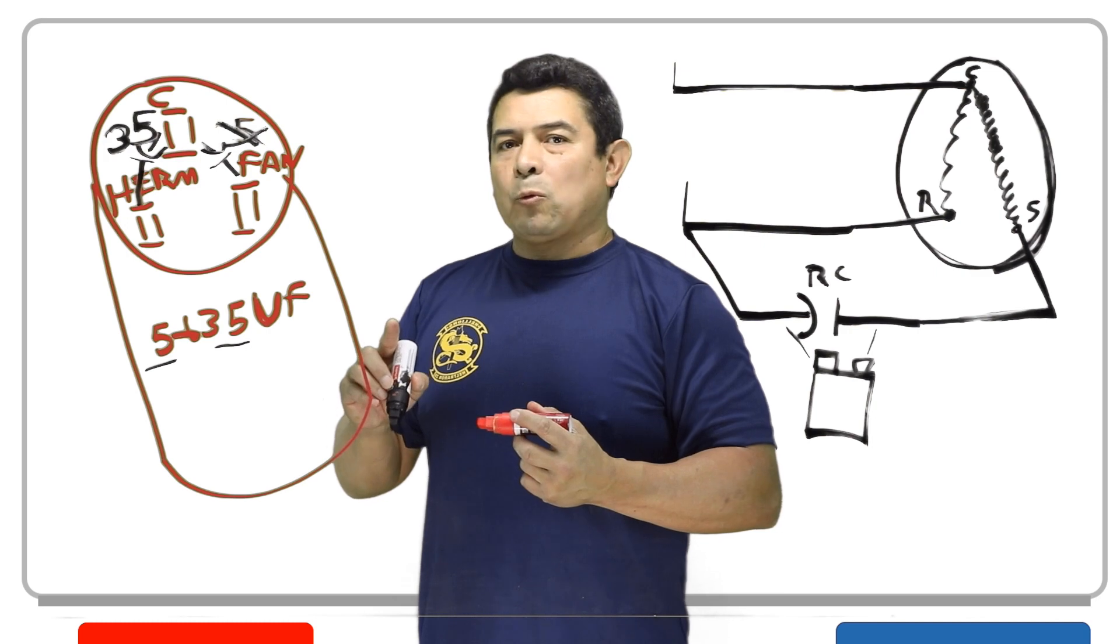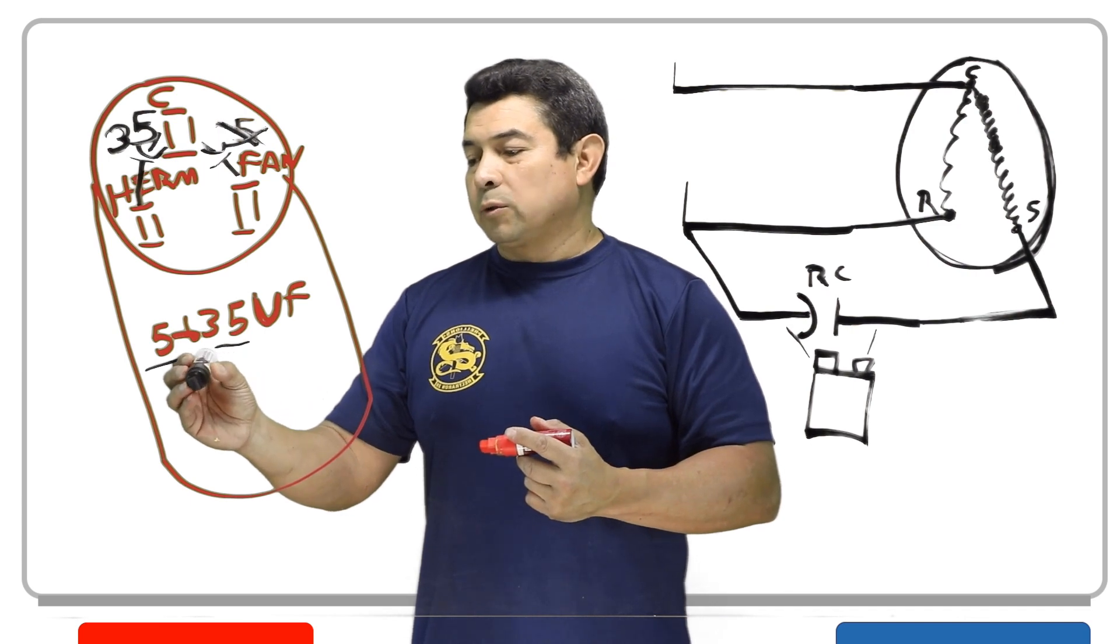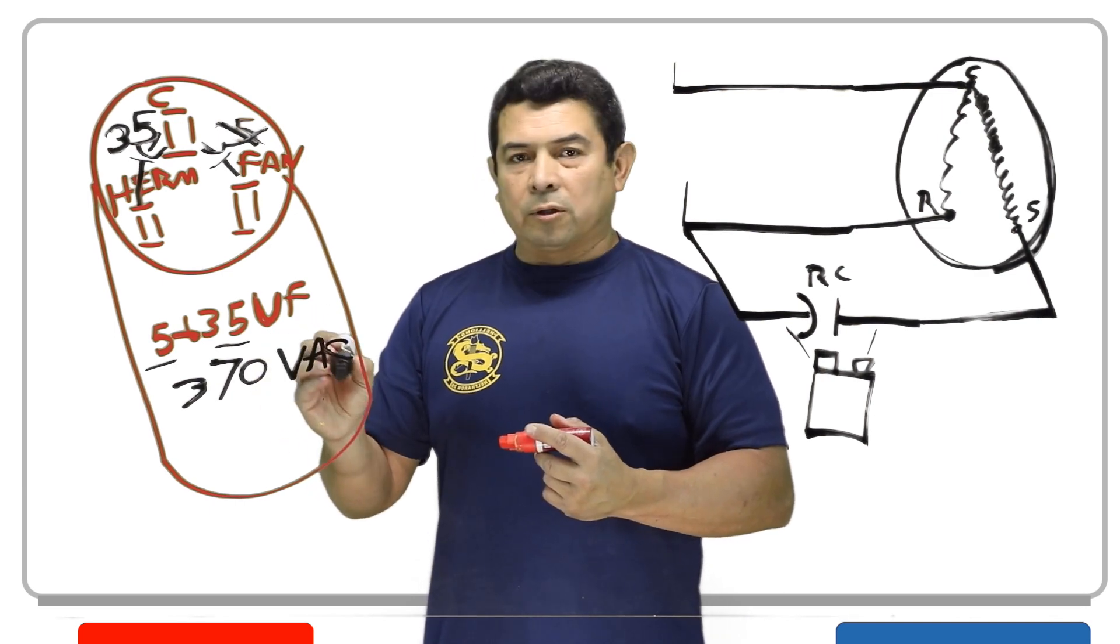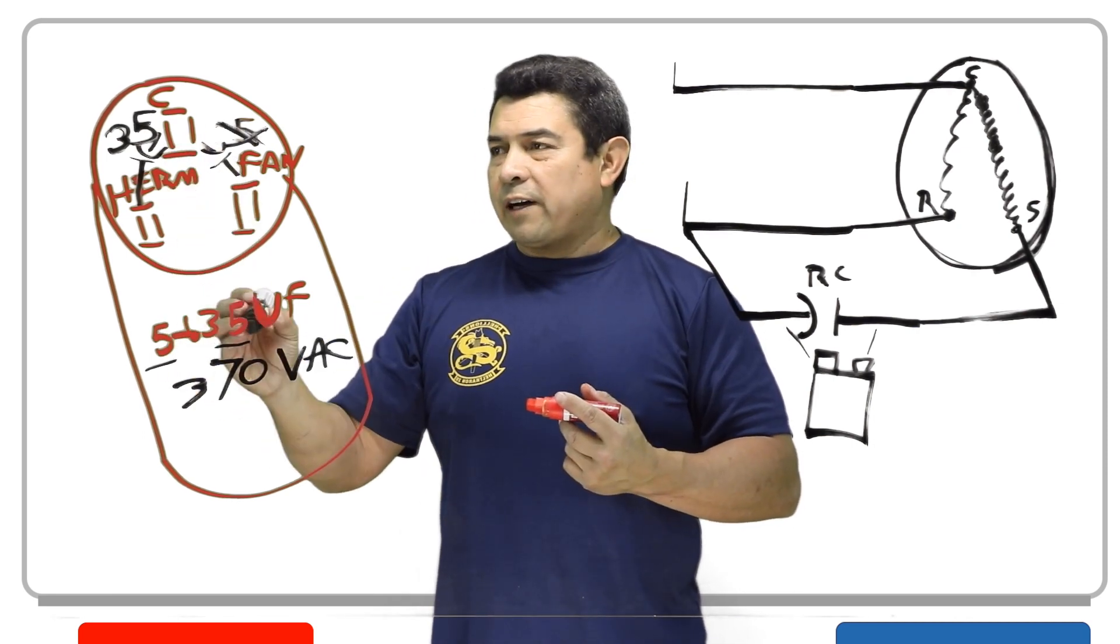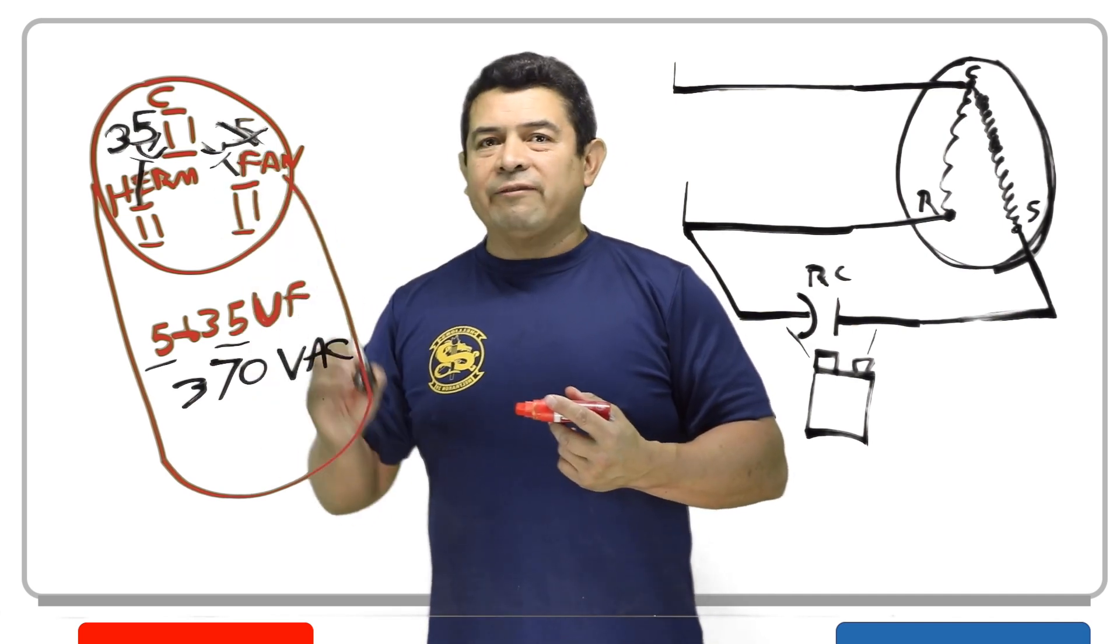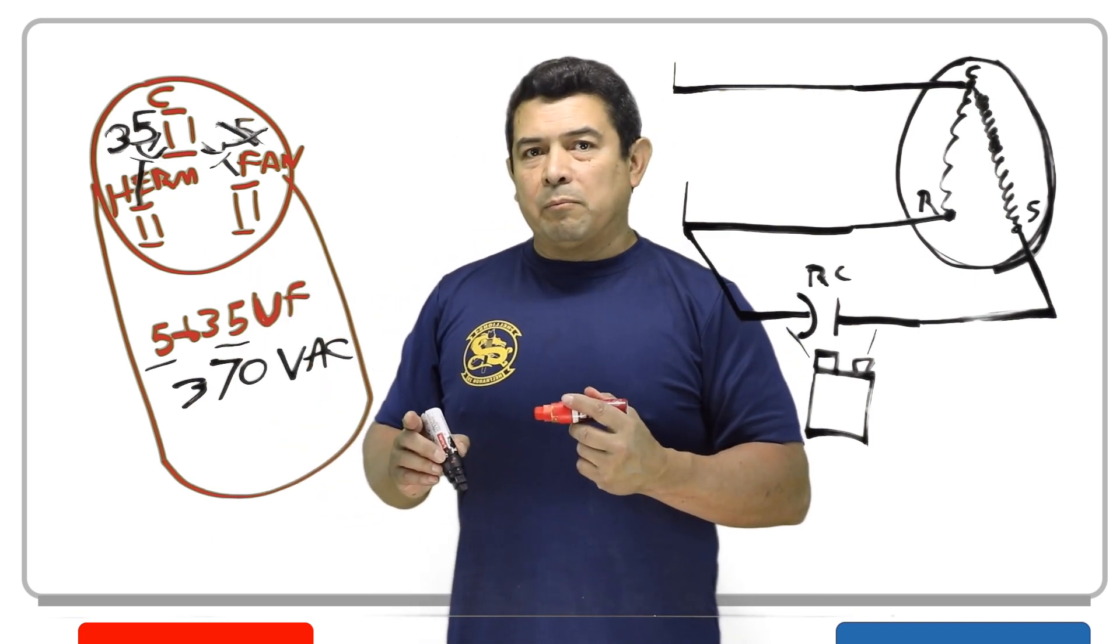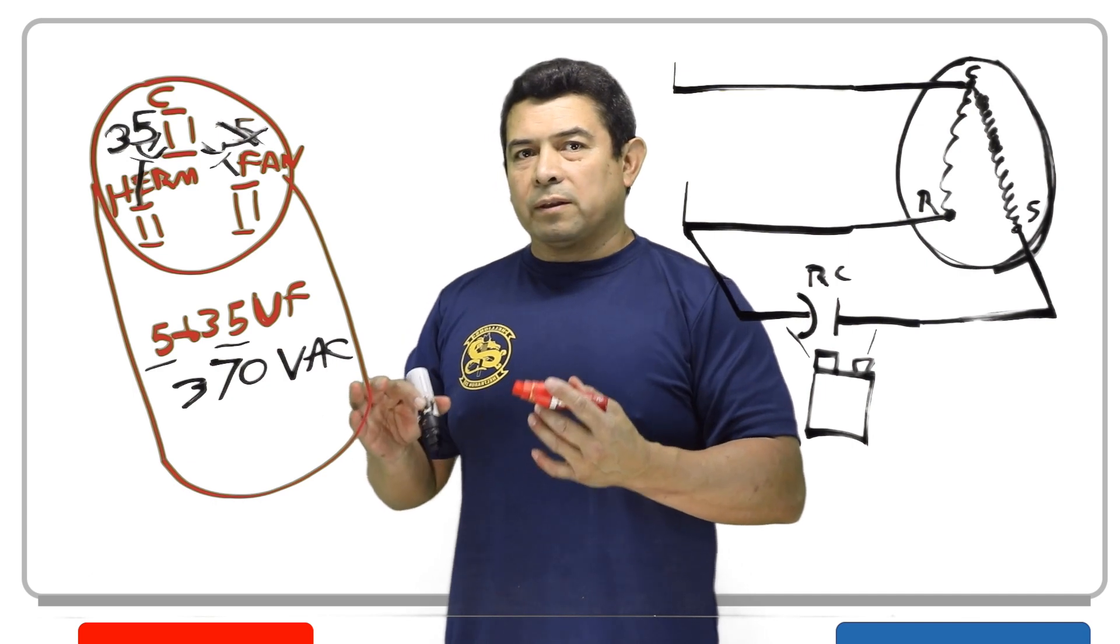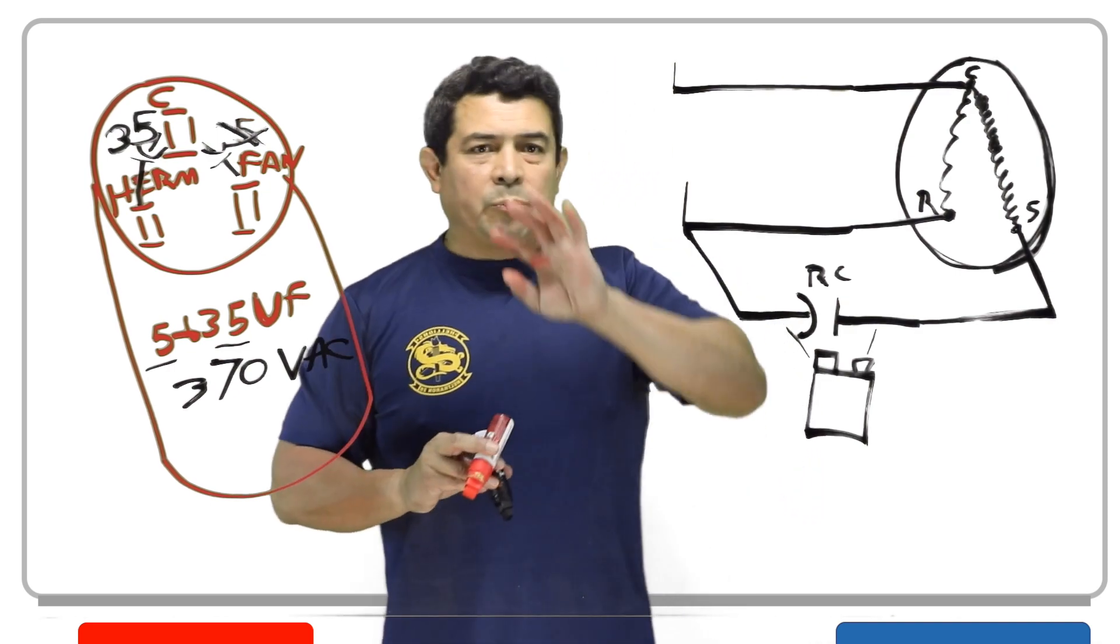You have several choices here. One would be to go and see if you have one of these in your truck, a 35 plus 5. And also check the voltage. Let's say the voltage happens to be 370 VAC volts alternating current. So in other words, you check it to see if you have a 5 plus 35 microfarad capacitor. Or you can see if you have a 5 microfarad capacitor only, or if you have a 35 plus a 5 microfarad capacitor. So with this, you're going to have this choice that you're going to have to make. How can you get this air conditioner to work?